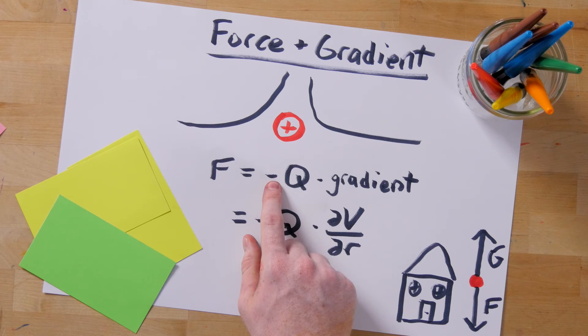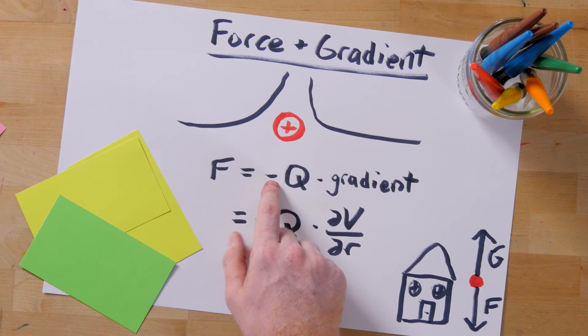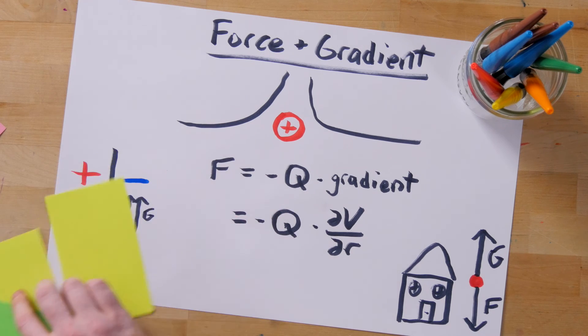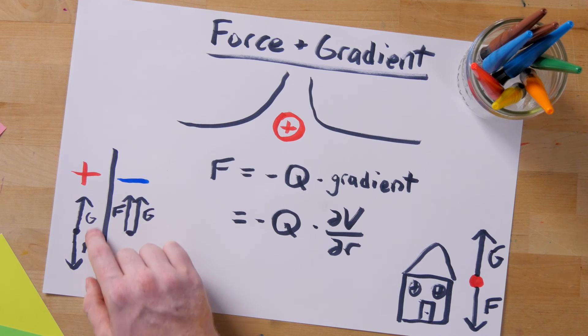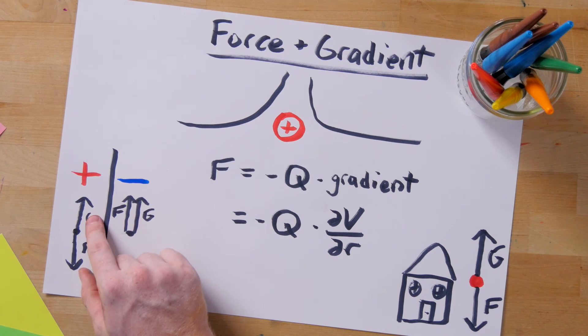So what about the negative sign? Just like with gravity, the gradient always points toward higher potential. That means that the forces on a positive charge always point in the opposite direction of the gradient.